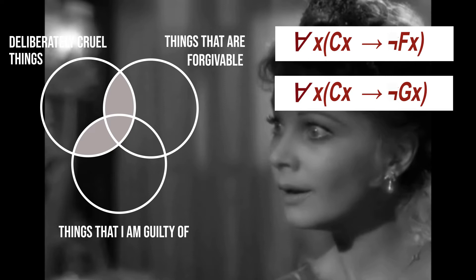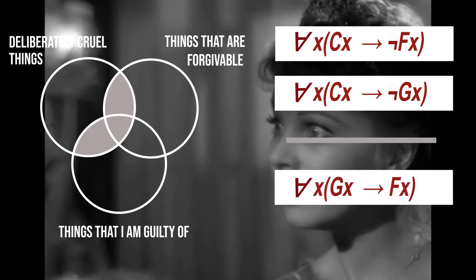We may now wonder whether she is only guilty of forgivable things. We phrase this as: all things that I am guilty of are forgivable. Is this a valid conclusion?